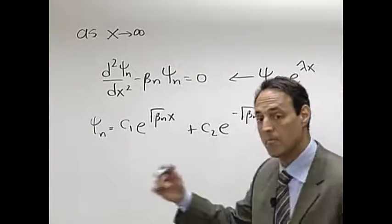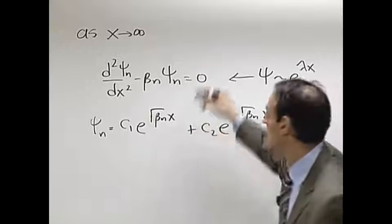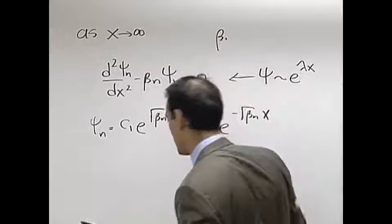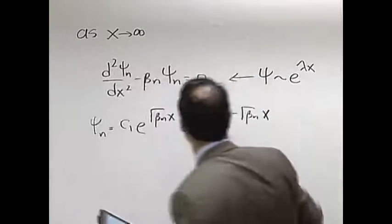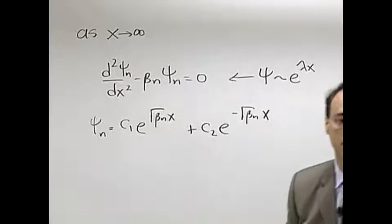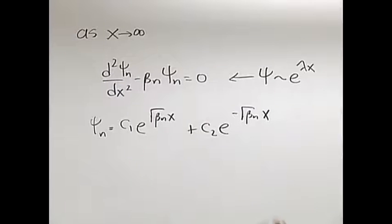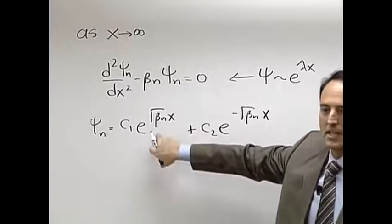Tell me what happens to these two terms as X goes to infinity. And by the way, we're going to look only at beta being positive. Actually, sorry, no we're not. Let's just for a minute though consider that. What happens if beta n is positive? So that these are positive numbers. Tell me what happens to that term.